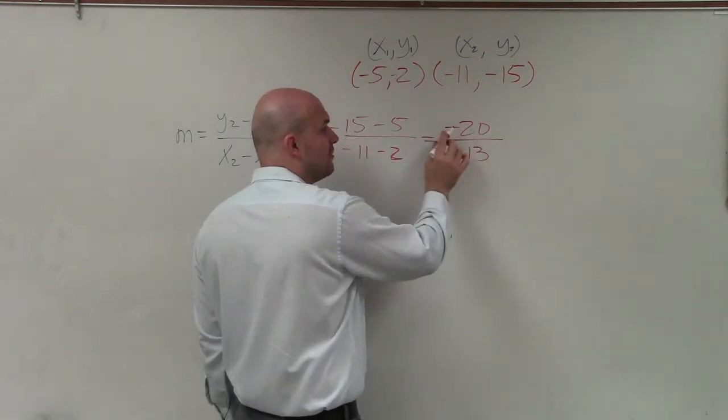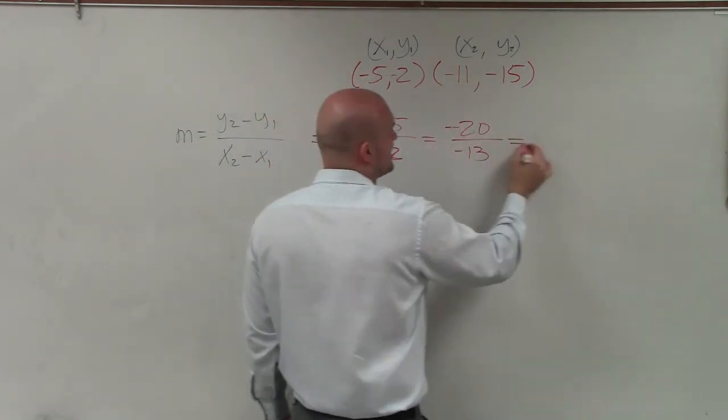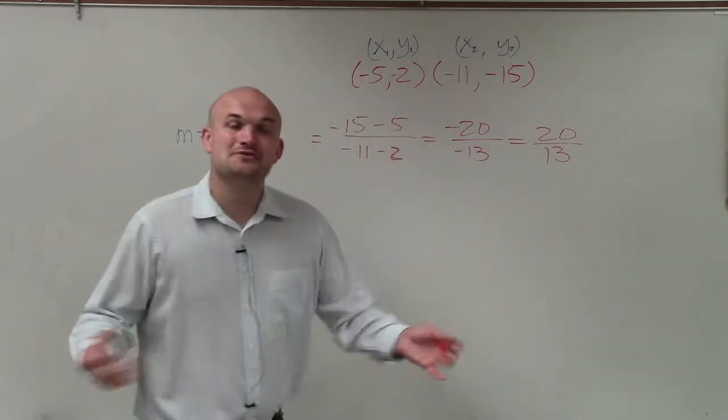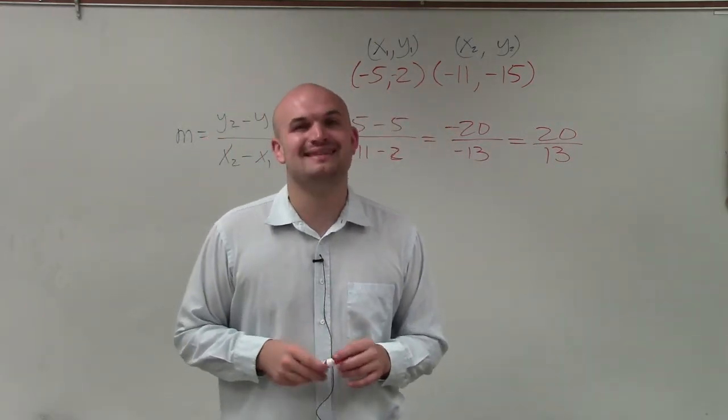I cannot simplify this any further. However, I can divide out my negative signs to provide me with a slope as a positive 20 over 13. So there you go, ladies and gentlemen. That is how you find the slope between two points. Thanks.